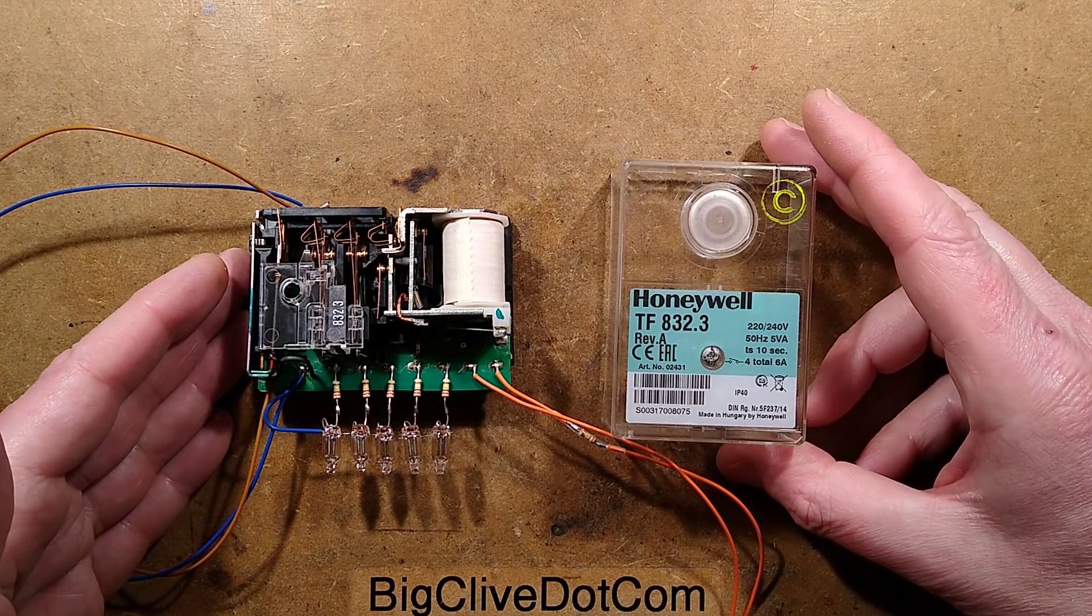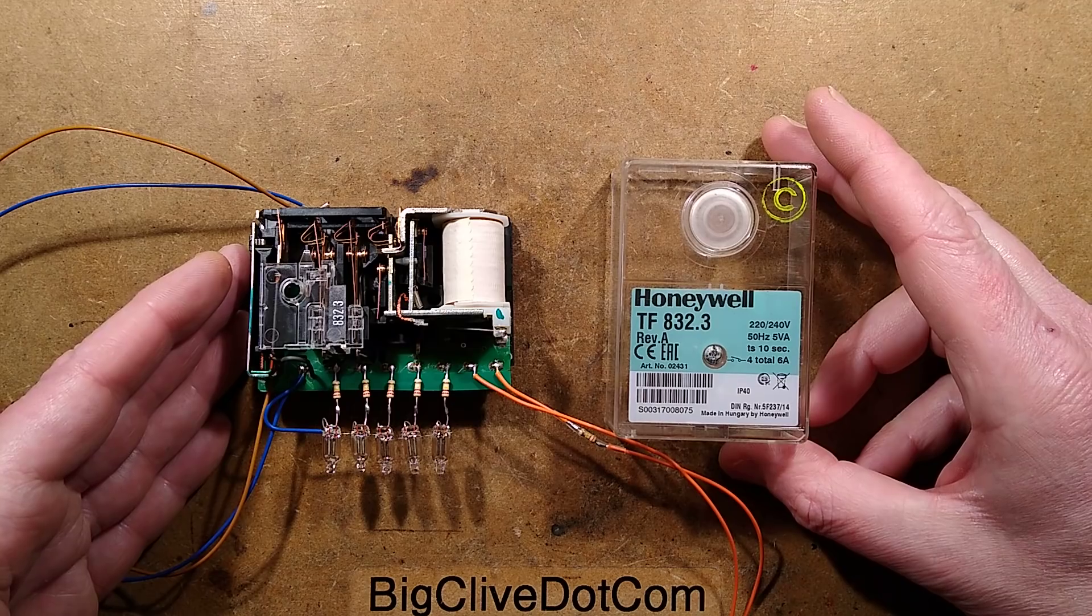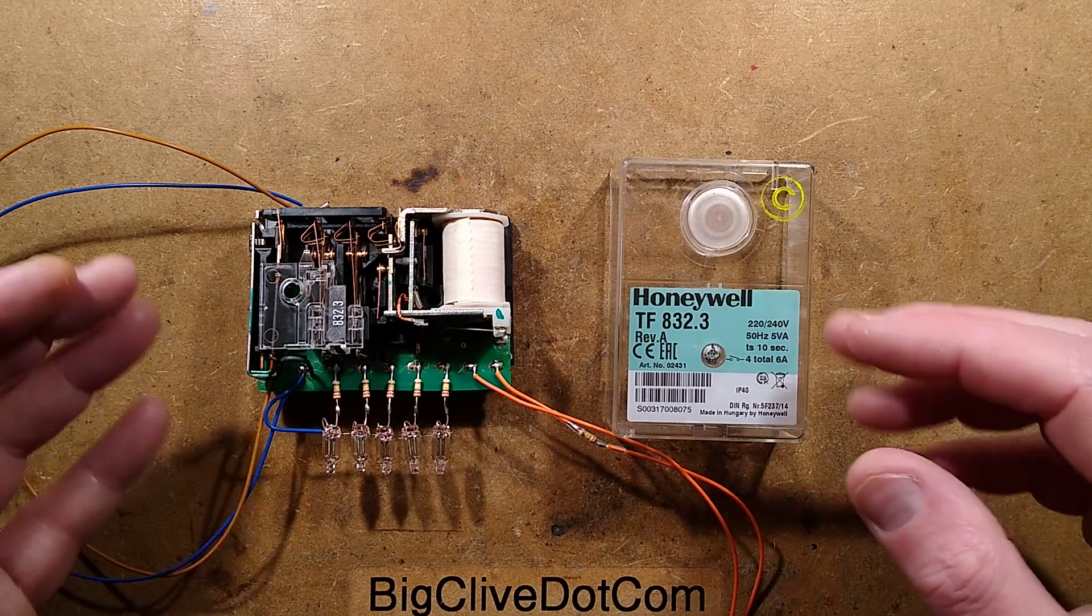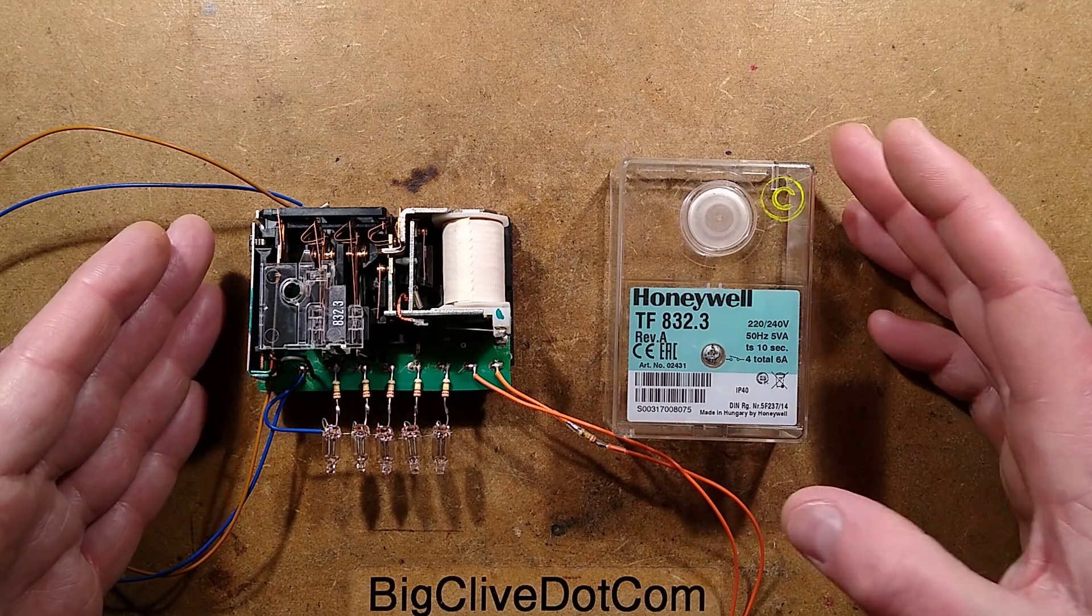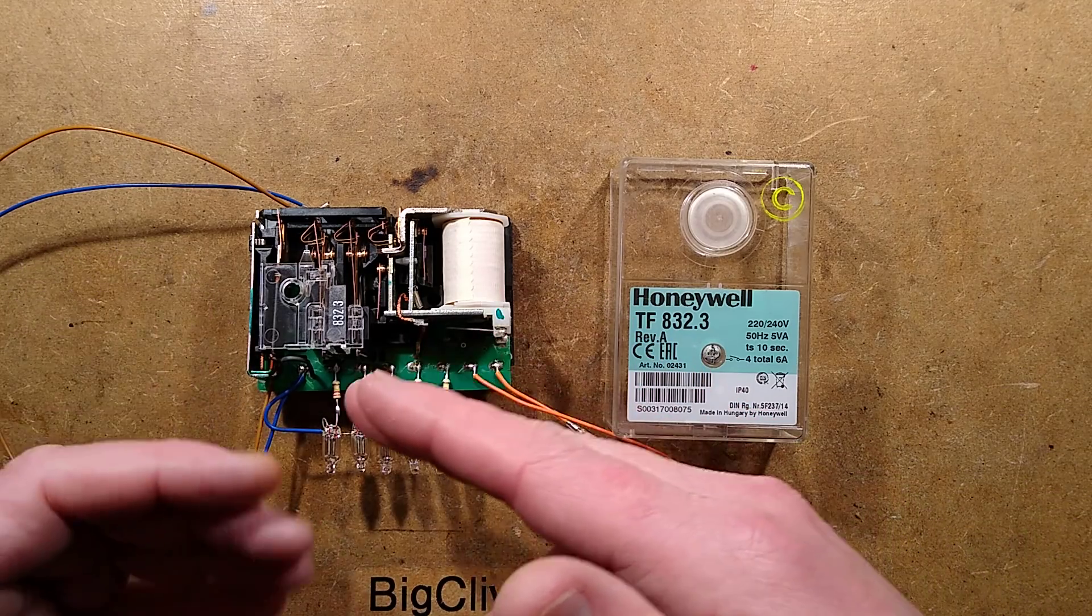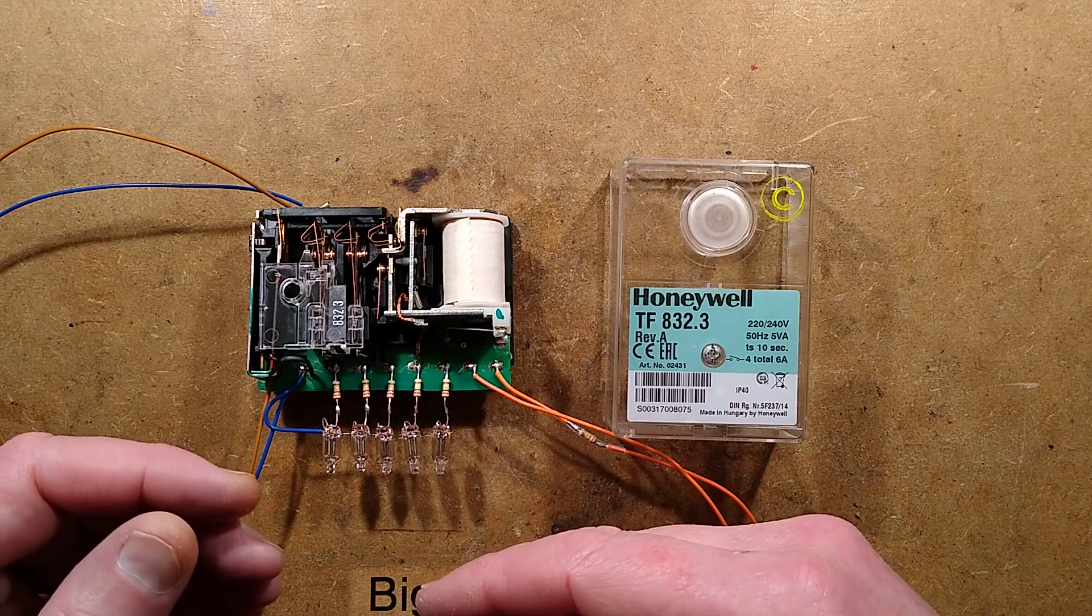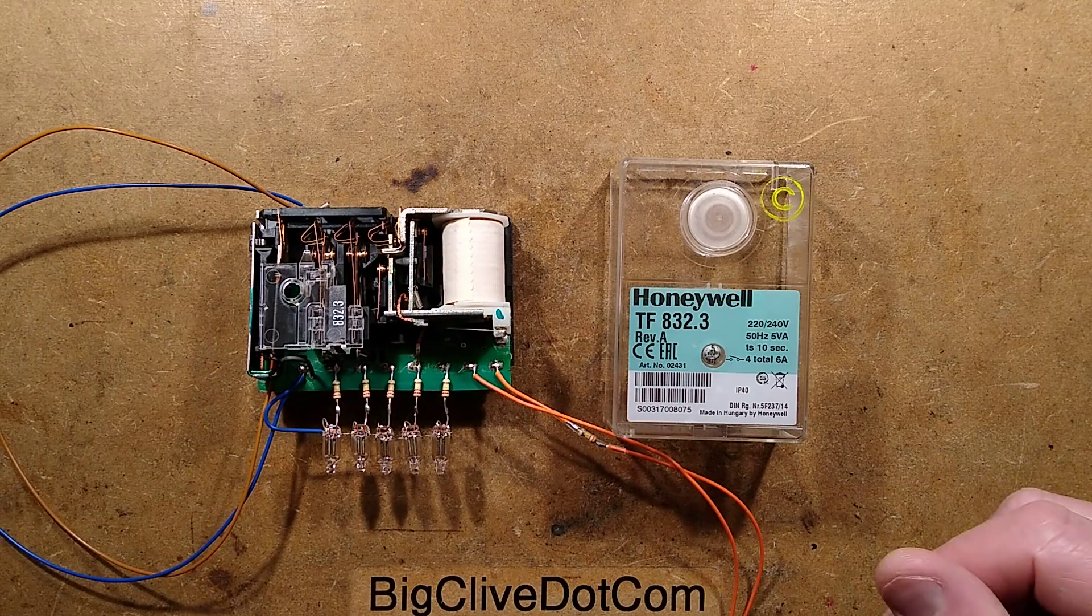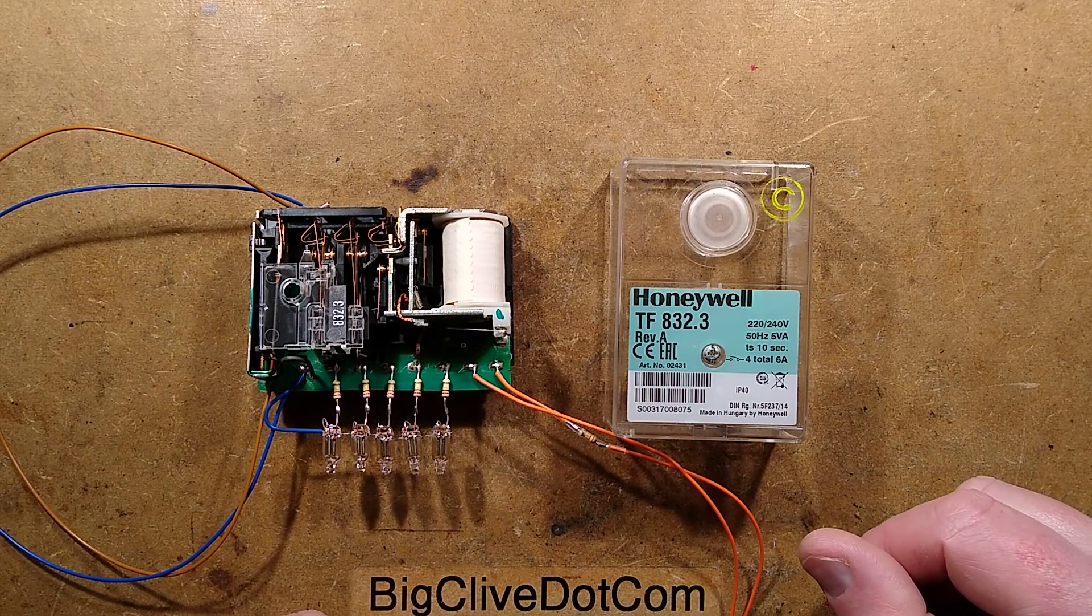This video is about a Honeywell oil burner control module. I've never really opened one of these before and thought it would be fairly straightforward, like circuitry sequencing relays or motors or something, a motor with a cam or something like that. But it's not.